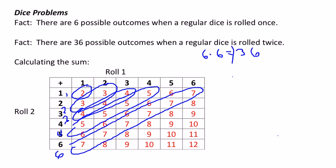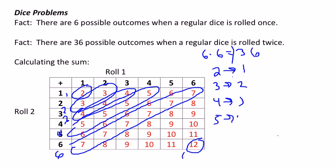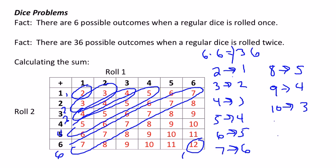Seven is the most ways you can get any one sum. Then it starts going back down — eight has five ways, then four, three, two, and one, where there's only one way to get a 12. So the pattern goes up from one to six and then back down to one. If you can remember this chart, it makes any sum problem involving two dice very easy to calculate.